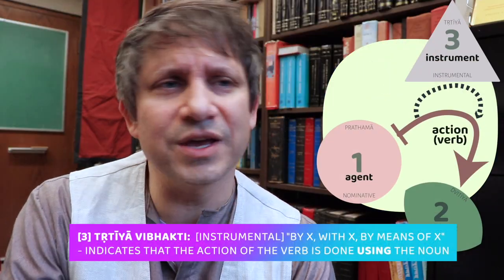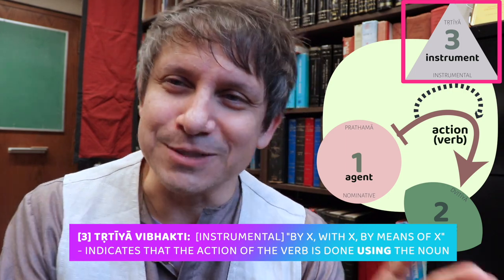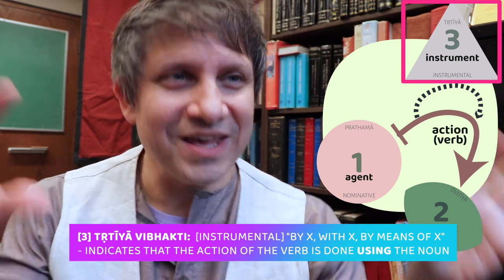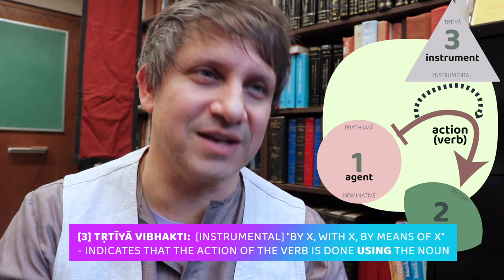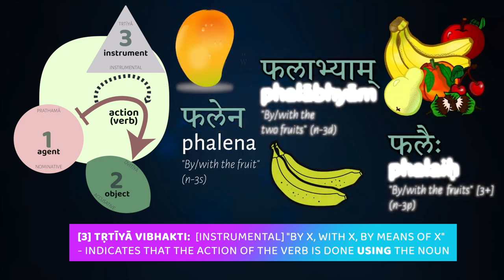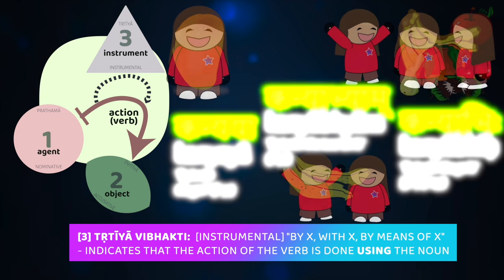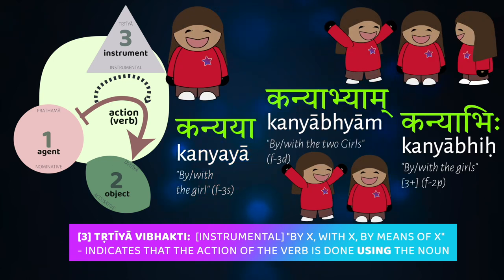Finally, we'll turn to the third case, the tritya vibhakti, the instrumental. This we can translate as 'by,' 'with,' or 'by means of x.' For masculine gajaha, the forms are: gajena, gajabhyam, gajaihi — by the elephant, by the two elephants, by many elephants. For neuter, the forms are the same as masculine: phalena, palabyam, phalaihi. For the feminine kanya, the instrumental forms are: kanyaya, kanyabhyam, kanyabhihi — by the one girl, by the two girls, by three or more girls.